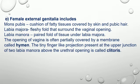Female external genitalia includes the mons pubis, a cushion of fatty tissue covered by skin and pubic hair; labia majora, fleshy folds that surround the vaginal opening; labia minora, paired folds of tissue under the labia majora. The opening of the vagina is often partially covered by a membrane called the hymen. The tiny finger-like projection present at the upper junction of the two labia minora, above the urethral opening, is called the clitoris.